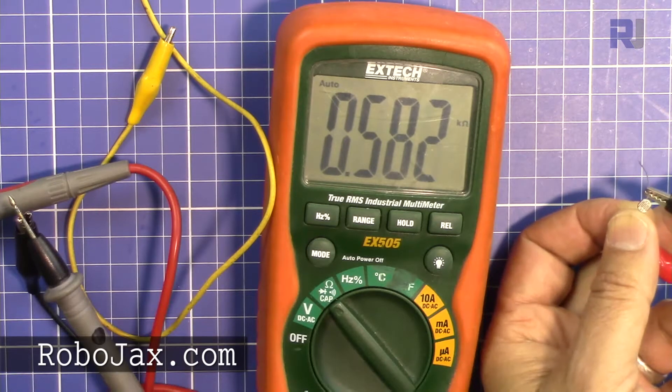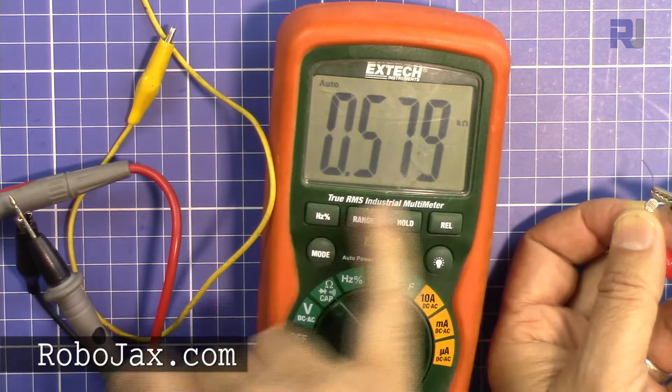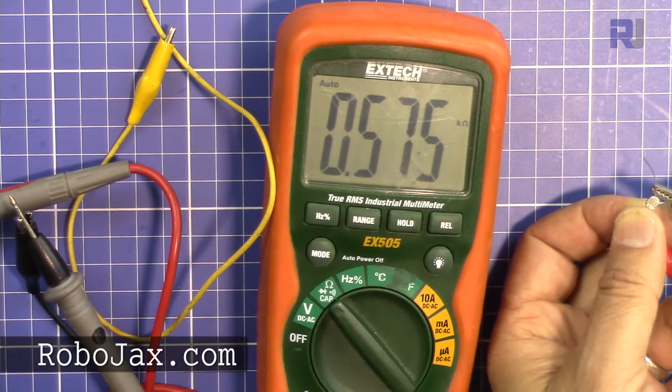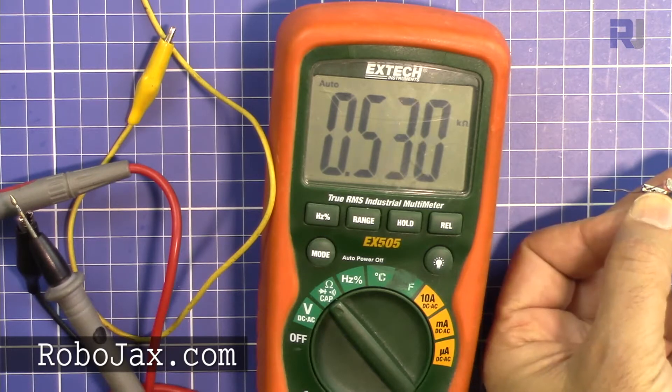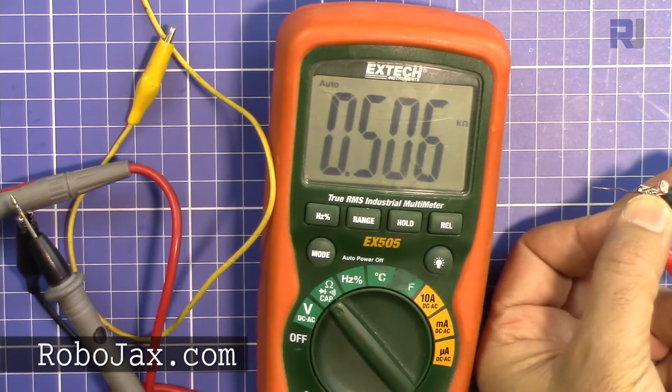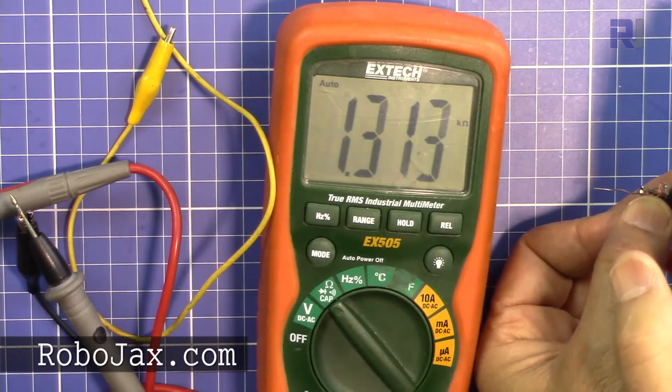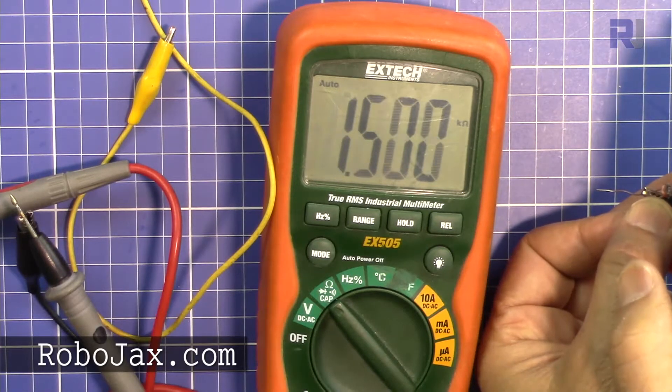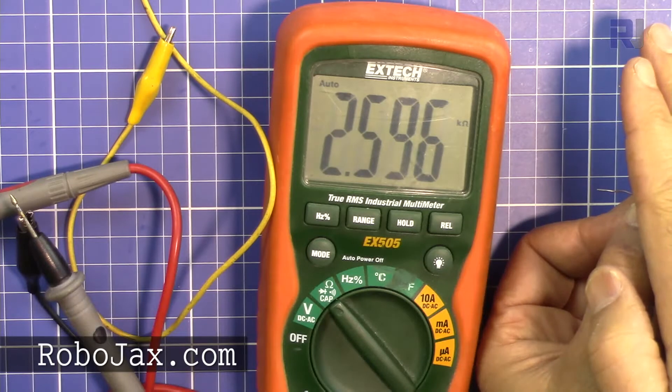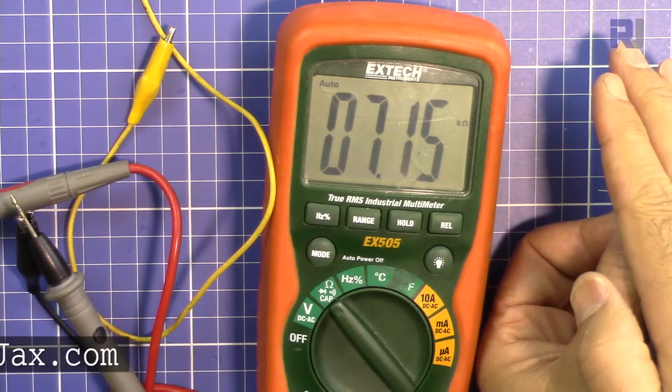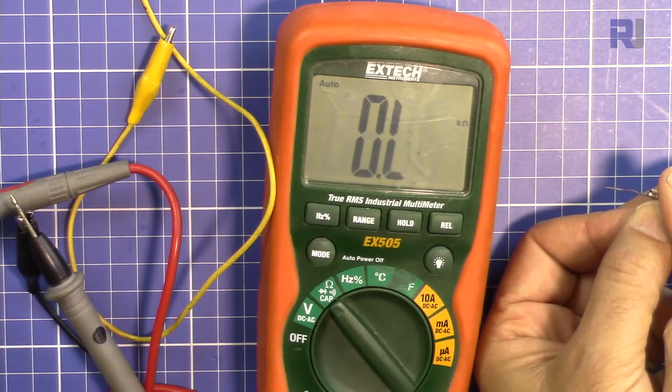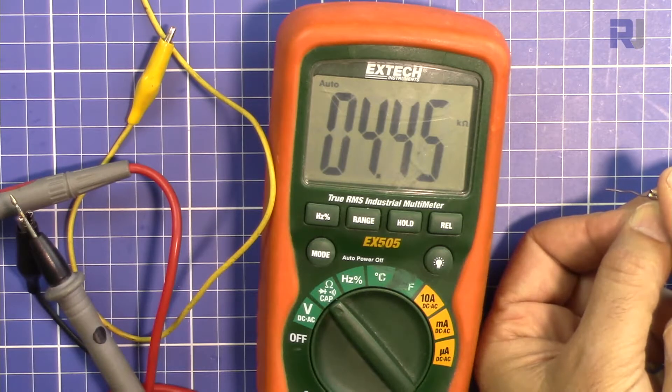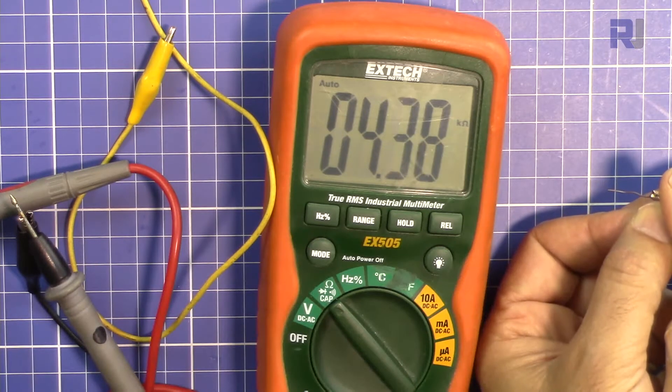This is 0.58 kilo ohm. Now that's the direction of light, a little light I have from the top. Let me cover it. So now we get 1.4 kilo ohm, 1.5, 1.8, 3 kilo ohm, 7 kilo ohm. And if I fully cover it, we'll get 4.5 kilo ohm.